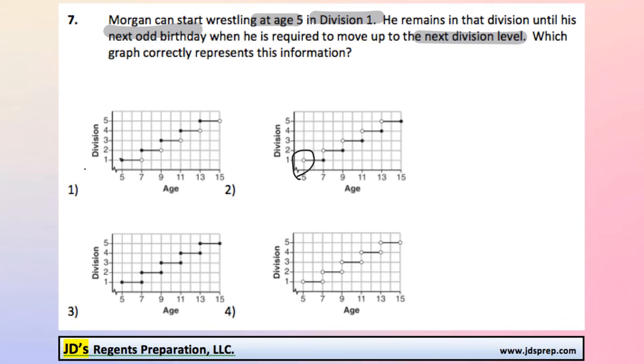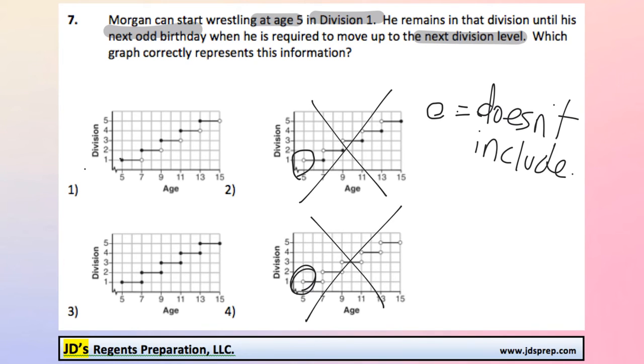Here's a problem. The open circle, just to make sure you know, means that it doesn't include that point. That would imply he'd have to wait until the day after his birthday to enter the division. But that's not the case, right? It's literally the day you turn the next age, that's when you start in that division. So it can't be this one, and because of the same open circle here, that can't be right either.